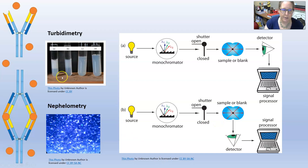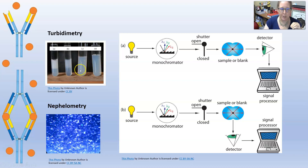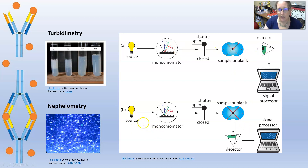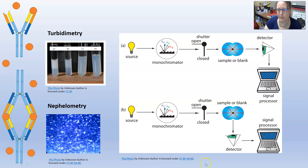This shows you turbid samples: turbidimetry looks at how much light can be shined through the cuvette and be transmitted and detected on the other side — all in one straight line to the detector. Whereas in nephelometry, think disco ball, think glitter scattering light — you shine the light on it and then light scatters, and you detect it at an angle.